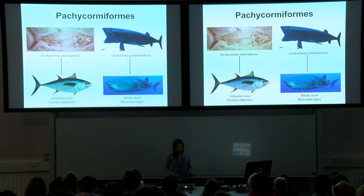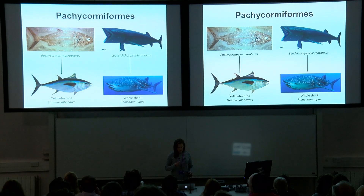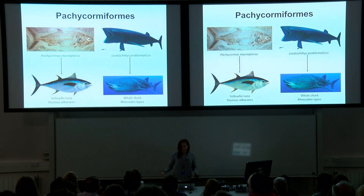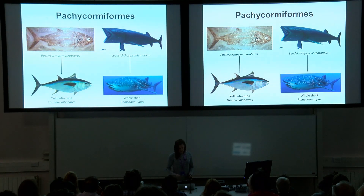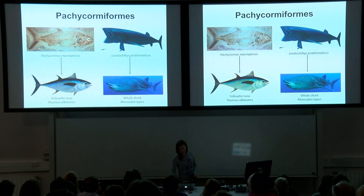You've got the fish-eating pachycomiforms and hypsocomiforms, which are generally considered to be ecological homologues of tuna, and then we've got the giant body suspension feeders such as Leedsichthys, which are generally considered to be precursors to mysticete whales and giant suspension-feeding chondrichthyans such as the whale shark.